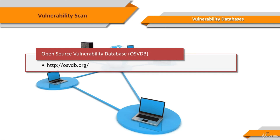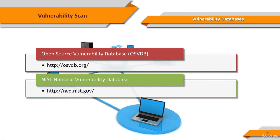The National Vulnerability Database (NVD) is the U.S. government repository of standards-based vulnerability management data represented using the Security Content Automation Protocol (SCAP). This data enables automation of vulnerability management, as well as security measurement and compliance. NVD includes databases of security checklists, security-related software flaws, misconfigurations, product names, and impact metrics.